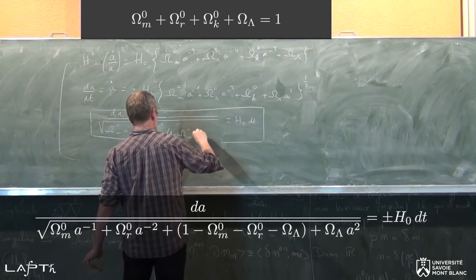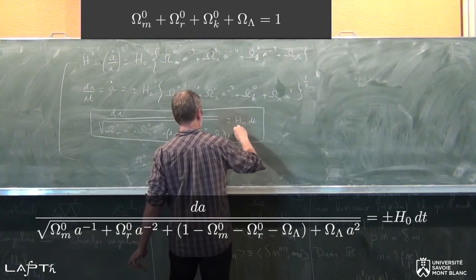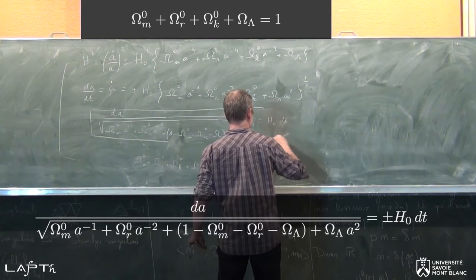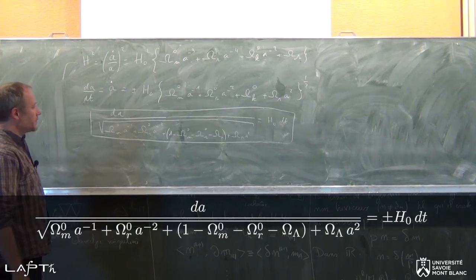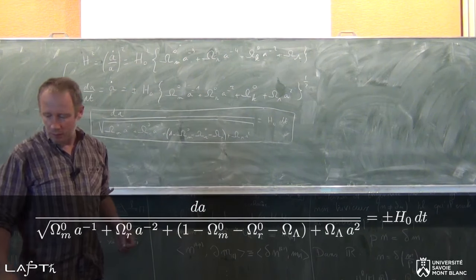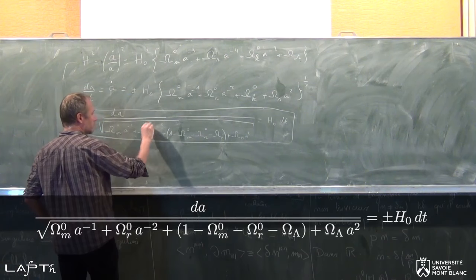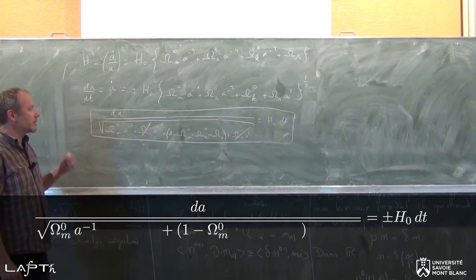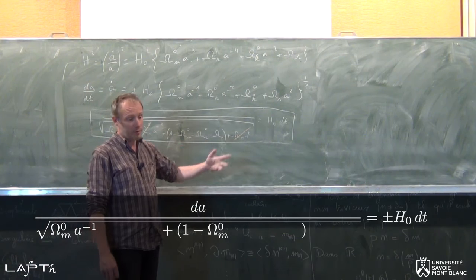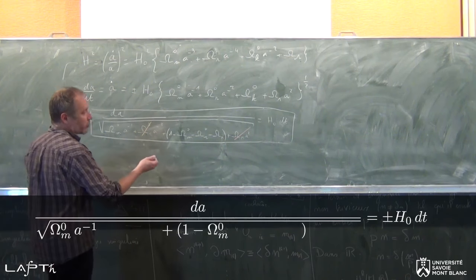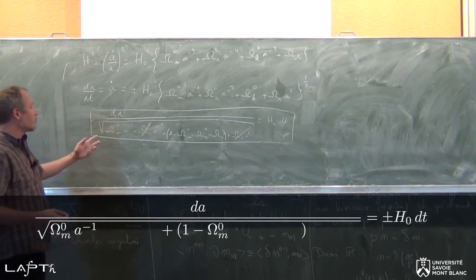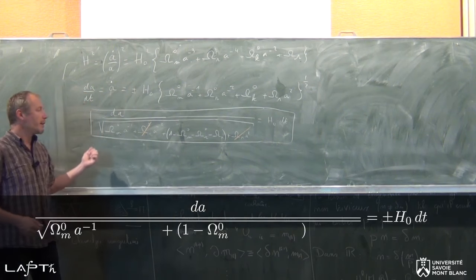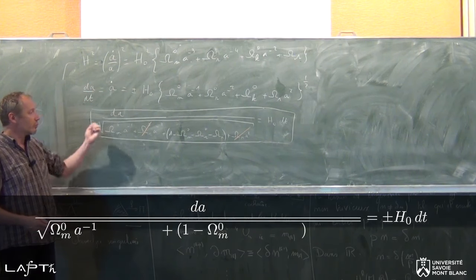Donc on peut écrire Ω_K0 comme 1 moins Ω_M0 moins Ω_R0 moins Ω_lambda, plus Ω_lambda A², le tout égal à H₀ dt. La première situation physique à laquelle je vais m'intéresser, c'est celle pour laquelle la contribution du rayonnement est nulle et pour laquelle on n'a pas de constante cosmologique. Ce cas a un intérêt pédagogique et académique : on peut s'intéresser à un univers dans lequel on n'aura effectivement que de la matière, sans rayonnement et sans constante cosmologique, ce qui va me permettre de montrer quelques propriétés des solutions.